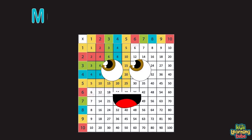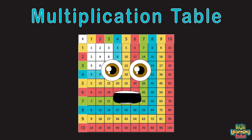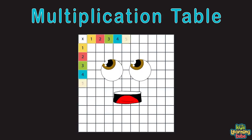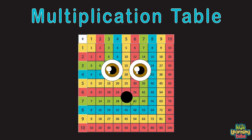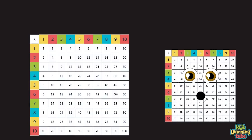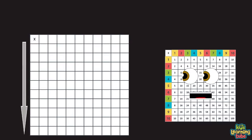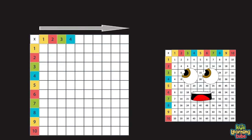I am the multiplication table. Remember me because you're able. We'll learn to multiply one through ten, up to one hundred because you can. Let's start by learning how the times table works, because learning to multiply is one of life's perks. You see that vertical line? It's numbered one through ten.